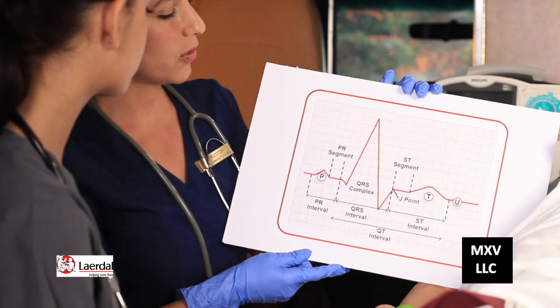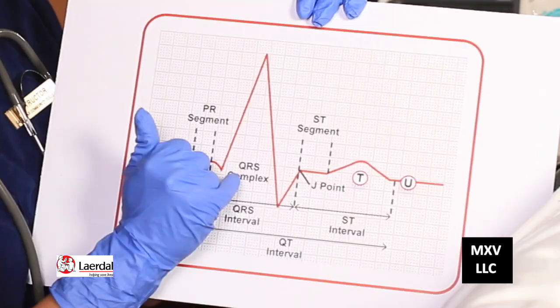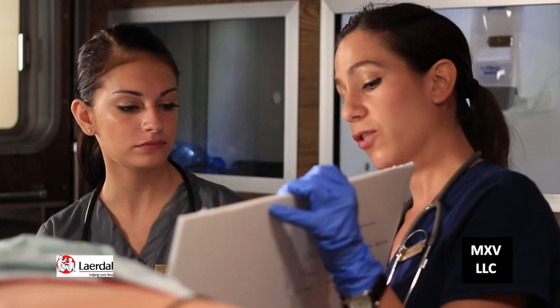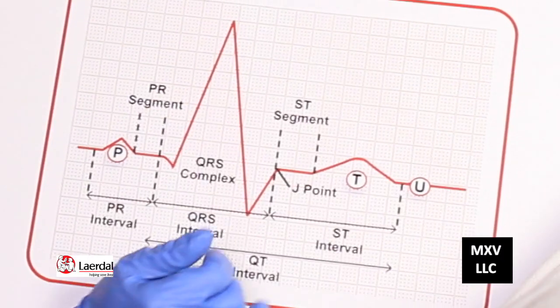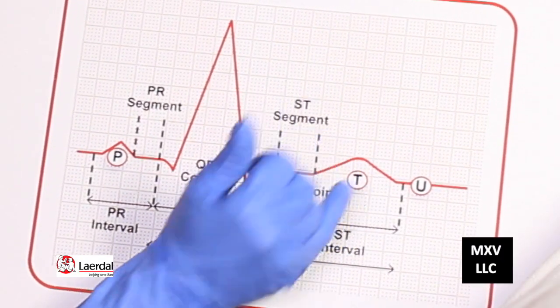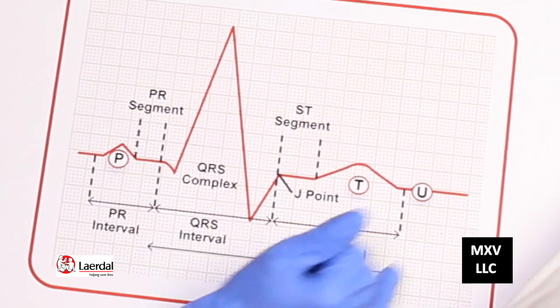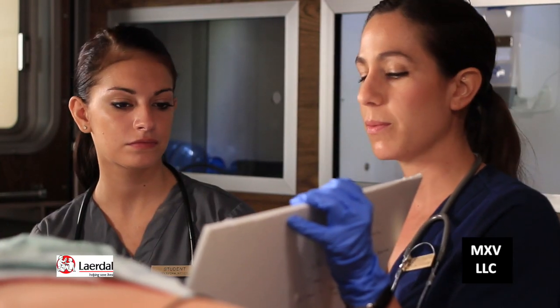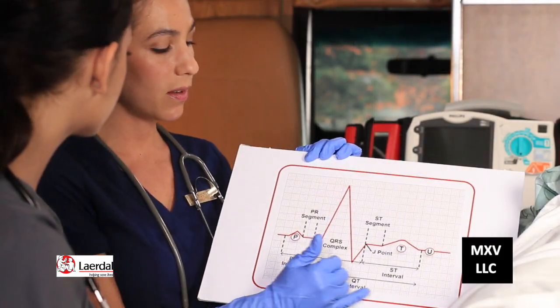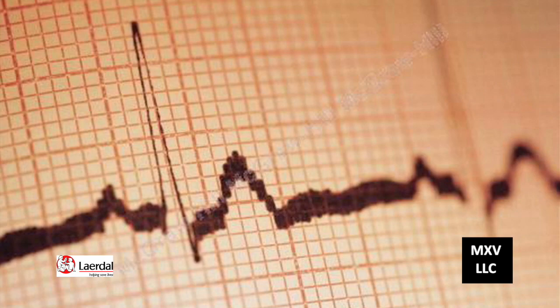The P wave represents atrial depolarization. The QRS complex is ventricular depolarization with atrial repolarization. The T wave is ventricular repolarization. The U wave is usually pathologic, sometimes seen in people with hyperkalemia. On the EKG, there are large boxes and small boxes, which will be explained using an exploded view.